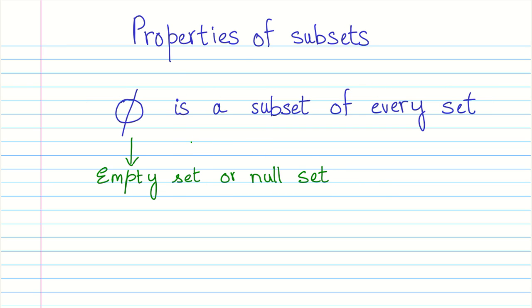Let us look at the second property. Empty set or a null set is a subset of every set. That is the second property. So whenever you are looking at a set, there are two default subsets that will always be there: the first one is the set itself, the whole set itself, and the second one is the null set.